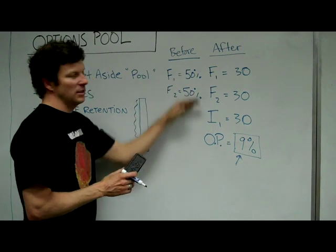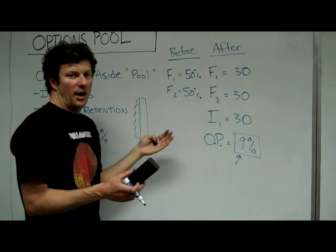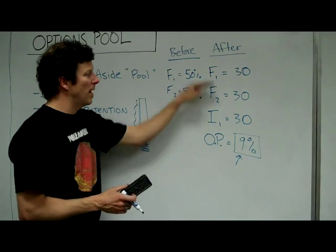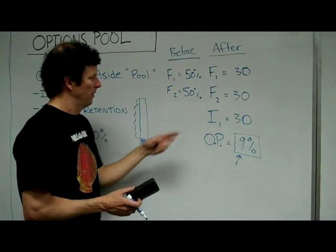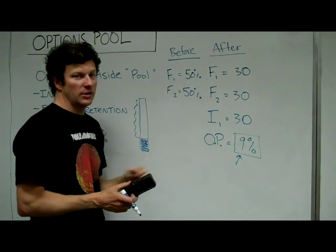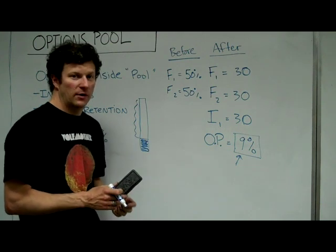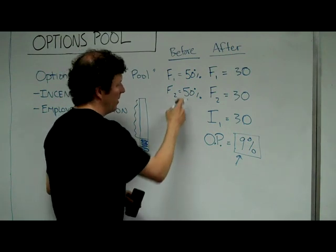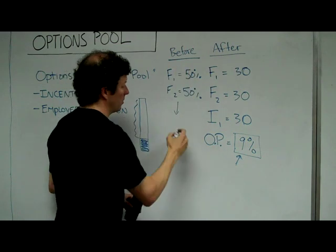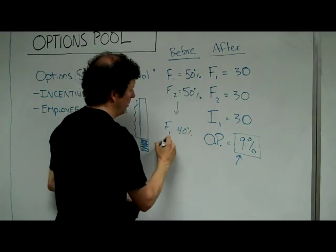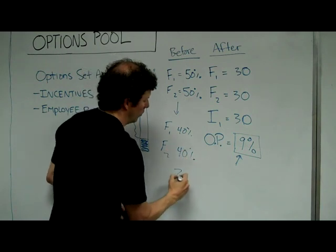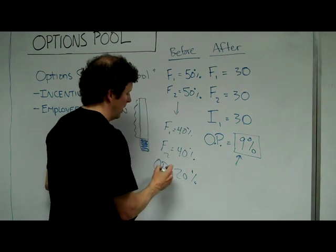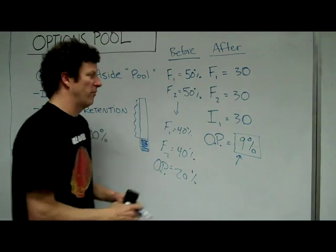The key here is that existing shareholders have to take a little bit out of their hide to create this options pool. There are lots of options for who does that — no pun intended. The investor can do it, the founders can do it, and that's typically negotiated during the funding round. If you do this at incorporation, it's easy — the two founders can simply agree with one another: we're going to create a 20% options pool, founder number one has 40%, founder number two has 40%. Incorporation is pretty simple; it's just in the documents. During a funding round, there will be some negotiation between the founders and investors.